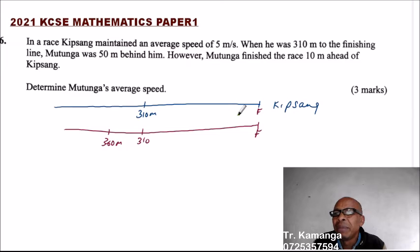Mutunga finished 10 meters. When Mutunga finished, Kipsang had, there were 10 meters here. So this is 10. That means that from 310, here we have 300, and here we have 10.